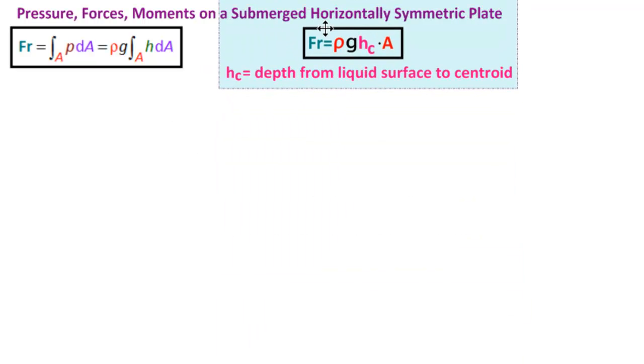Namely, for a submerged horizontally symmetric plate, the resultant force is rho g hc times A, where hc is the depth from the liquid surface to the centroid of this horizontally symmetric plate. This is an easy formula to remember, and it's based on that this looks like rho g h, so this is the pressure, times A.